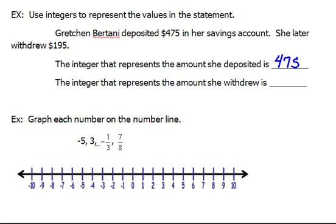The next one says the integer that represents the amount she withdrew is... Whenever you withdraw money, you are removing it. So that would be a negative $195.